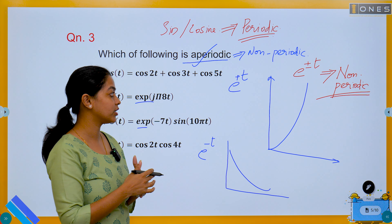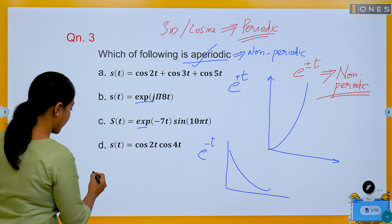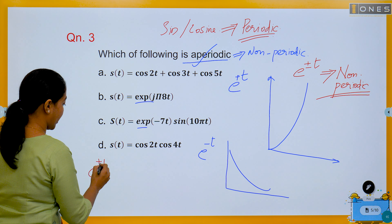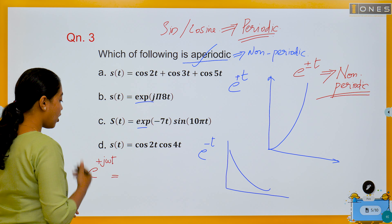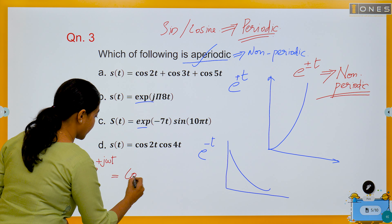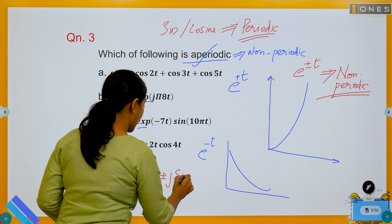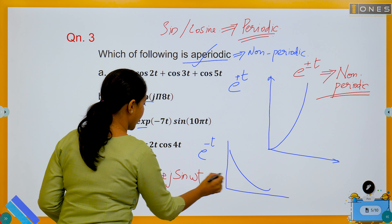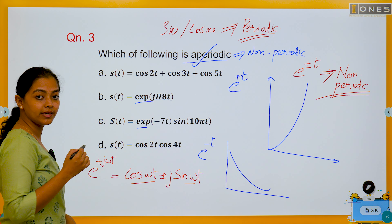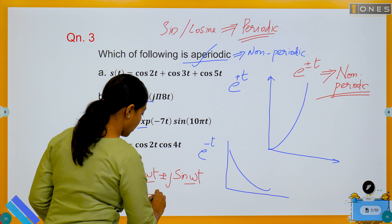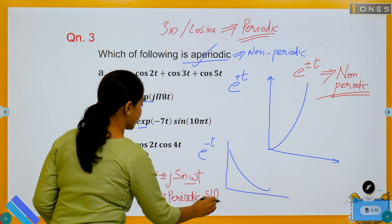Decaying exponential signals are non-periodic. E^(±jωt) is a complex exponential. Using Euler's formula, e^(jωt) = cos(ωt) + j·sin(ωt), which is also a periodic signal.